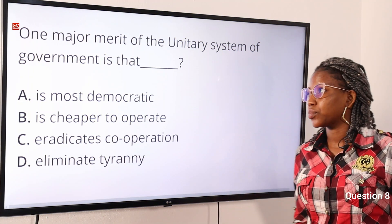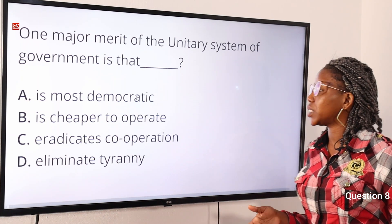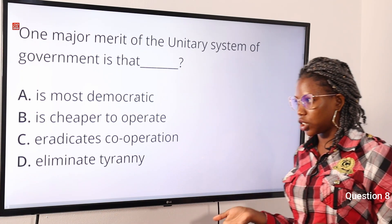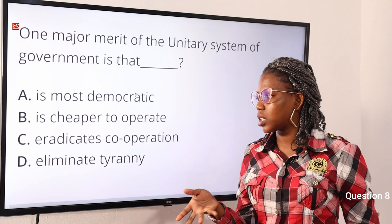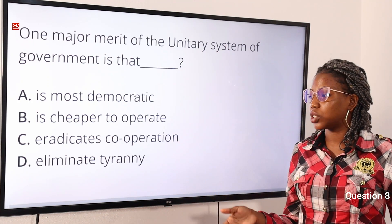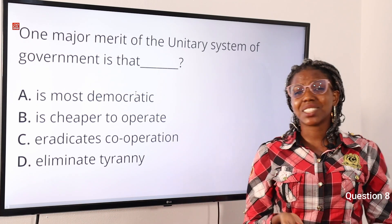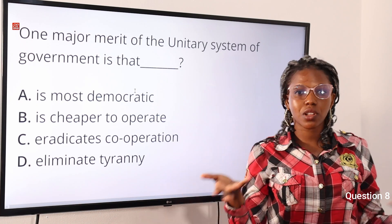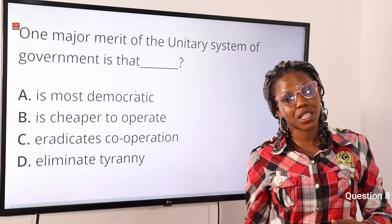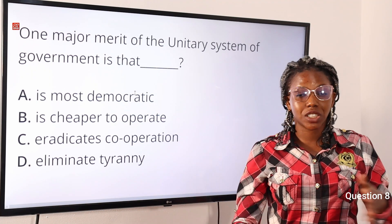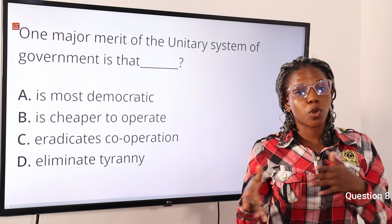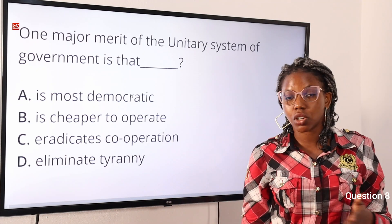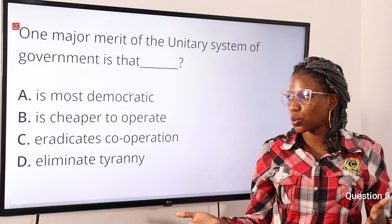Question eight: what major merit of the unitary system of government is that — option A: it is most democratic, option B: it is cheaper to operate, option C: it eradicates co-operation, option D: it eliminates tyranny. The answer is option B, it is cheap to operate. The unitary system concentrates power in a single authority, making it less costly, enabling quick action, and the constitution is flexible.